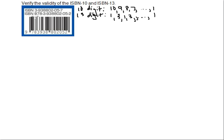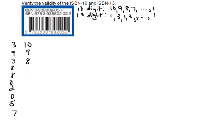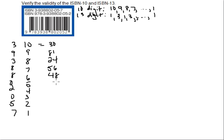Let's go through the 10-digit number first. I'm going to write this down vertically and then multiply by the weights of 10, 9, 8, and so on. So 3, 9, 3, 8, 8, 0, 2, 0, 5, and 7 are going to get multiplied by 10, 9, 8, 7, 6, 5, 4, 3, 2, and 1. Multiplying these we get 30, 81, 24, 56, 48, 0, 8, 0, 10, and 7.